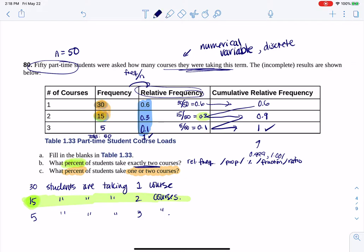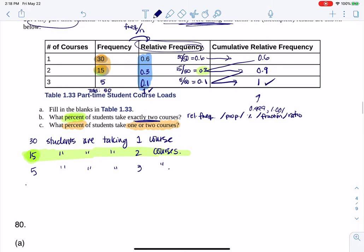So collectively, we have 45 students. 45 students are taking one or two courses. Another way of saying that is 45 students are taking two or fewer courses. And when we talk about the or fewer, we're talking about cumulative numbers now.